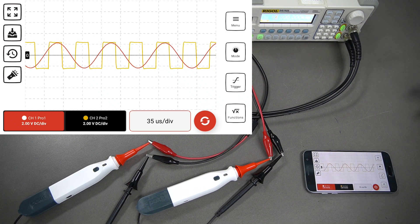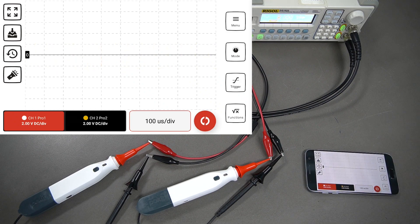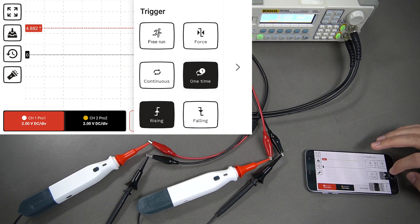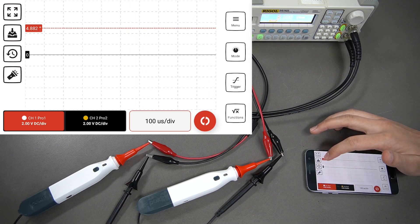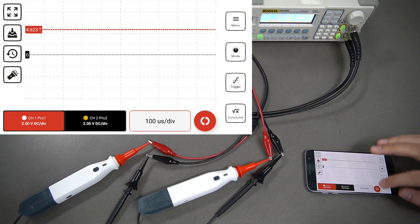We can stop that by pressing the button again. We've got a couple of other triggers here as well, one time and continuous. If you select any of these, you're going to get this trigger point here. You can drag that to wherever you want.